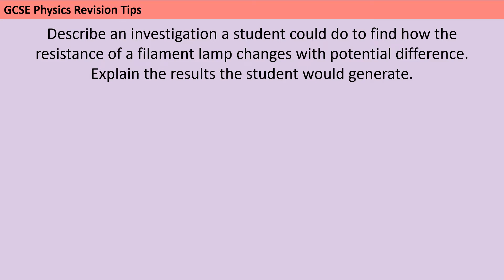This happens all the time when AQA ask about a slightly different question — like asking about the impact of different colours of light on photosynthesis rather than light intensity. So just be aware of that. For a method, it's a really good idea to write in a numbered list, and that's also going to help you if you have a panic in the exam and miss something out — you can just change your numbering, making it obvious to the examiner that they need to read the extra line you've added.